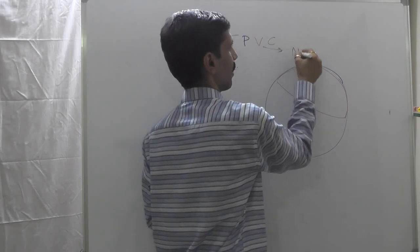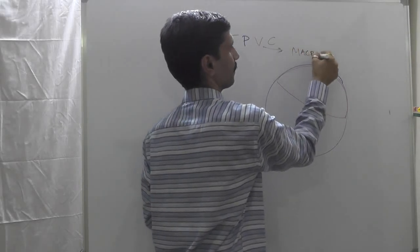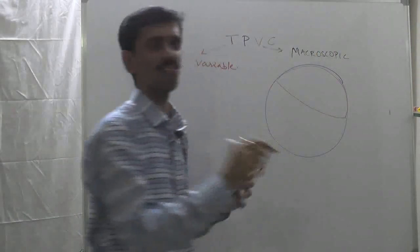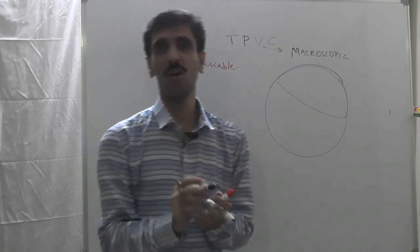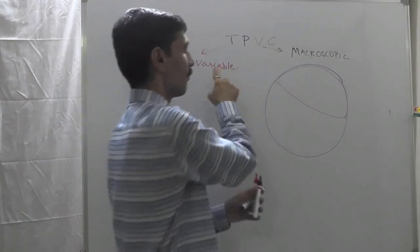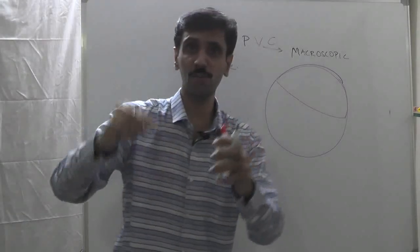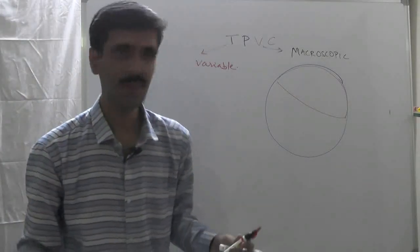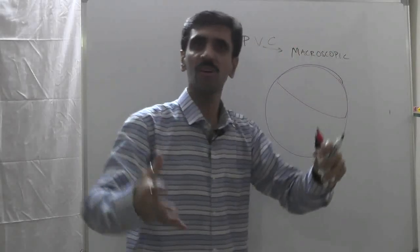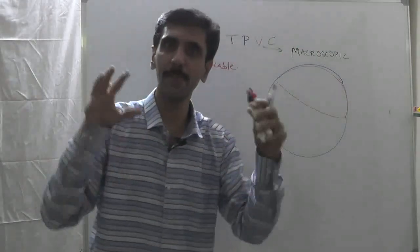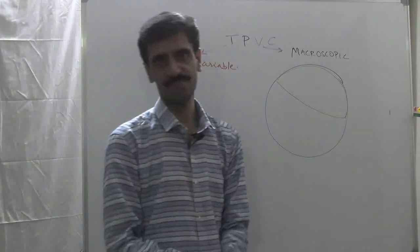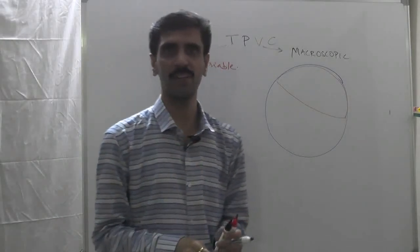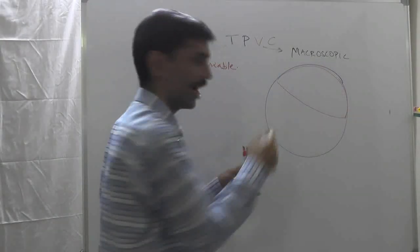That accurate large-scale observation is what brings the next term into the picture: macroscopic. Macro means something which is large. So these are the two names given to these properties: first, variable — because their values can change with time; and second, macroscopic — because their values accurately depend on a large amount of substance considered.